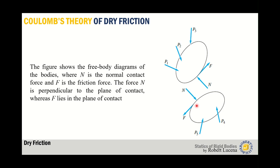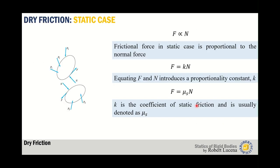In the free body diagram, N is the normal contact force and F is the frictional force. The normal force N is perpendicular to the plane of contact, while F lies on the plane of contact. Always take note that F always lies on the plane of contact. There is a relationship between F and N.